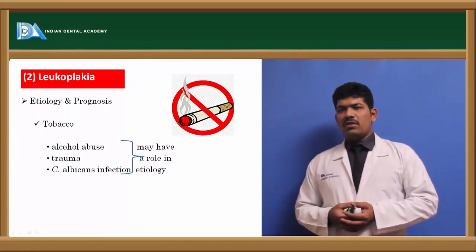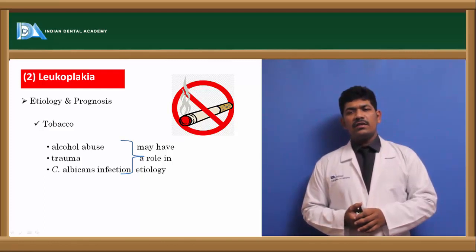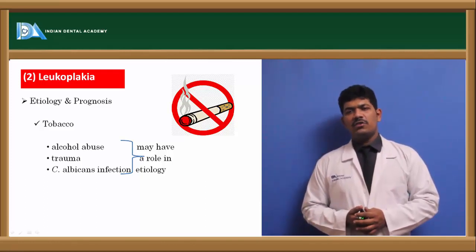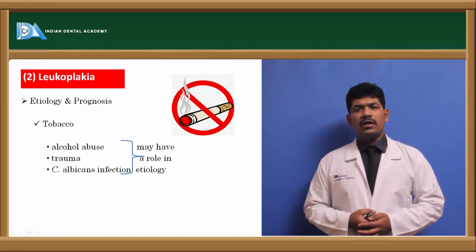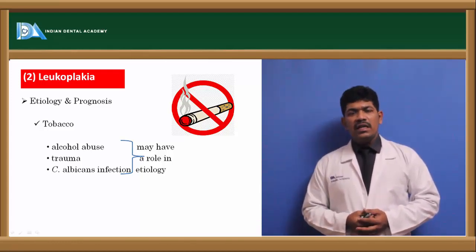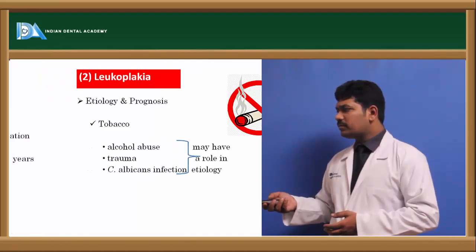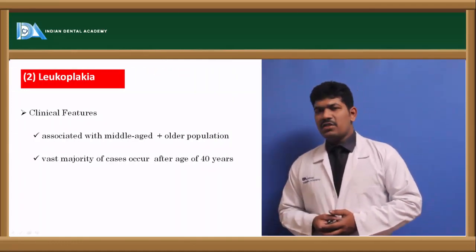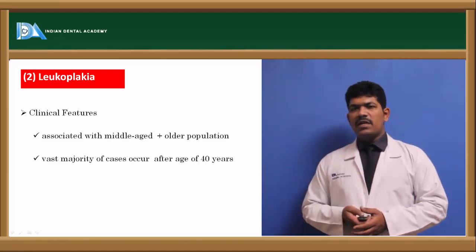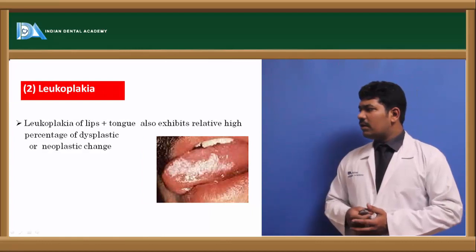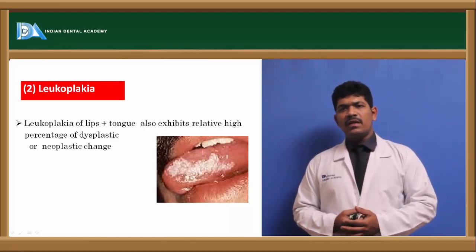Regarding etiology, since the WHO definition applies, a single particular etiology cannot be classified — it is a combination of different types. The most common among them is tobacco and alcohol usage. Candida albicans infection has been indicated in a few cases, and trauma could also play some role in the progression. Clinically, leukoplakia is normally seen in the fifth or sixth decade, with a peak between the fourth to sixth decades in middle-aged or older populations. It is commonly seen on the lips and tongue, but the highest percentage is seen on the buccal mucosa bilaterally.